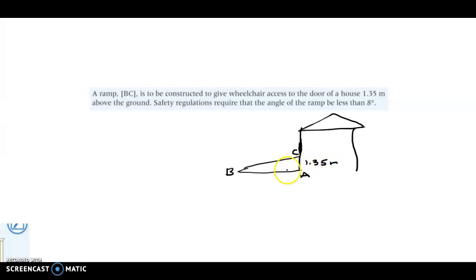So we can make this a triangle if we just connect it with the ground. And what the angle that the ground makes with any structure, if it's built correctly, is 90 degrees. So there we have our right triangle. Safety regulations require that the angle of the ramp be less than 8 degrees. So it can only be 8 degrees or less.